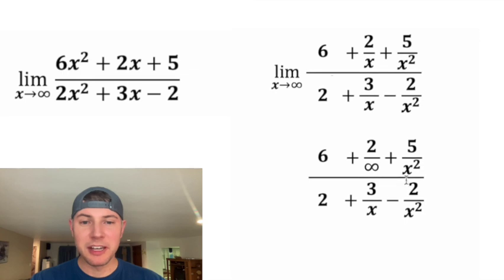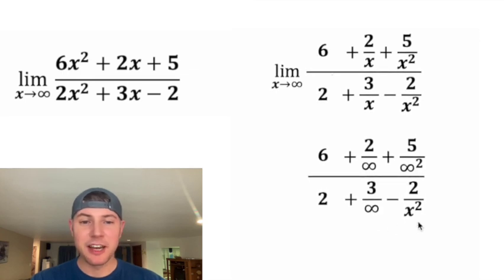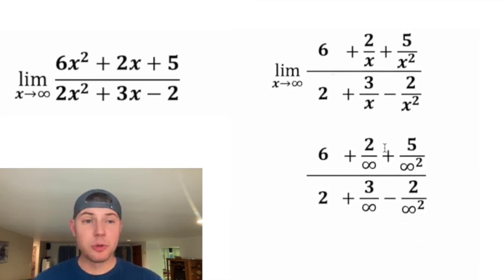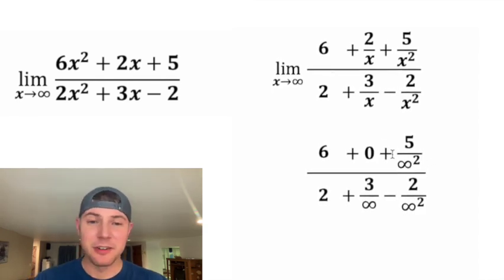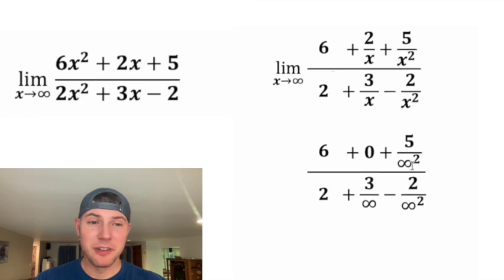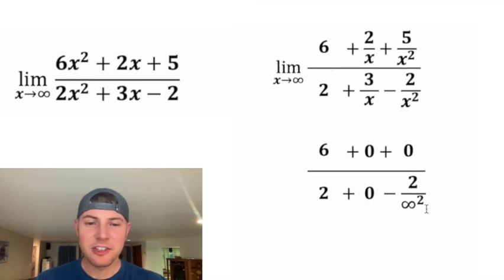You can imagine literally plugging in infinity in for each of the x's. And just what would 2 divided by infinity be? If you had 2 and you cut it into infinity pieces, it ends up being 0. And this one would really be 0 when you're divided by infinity squared. And then these last two will also be 0.